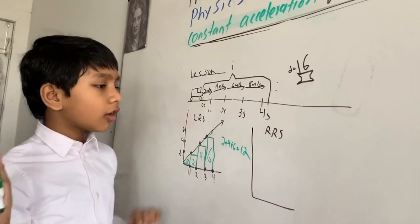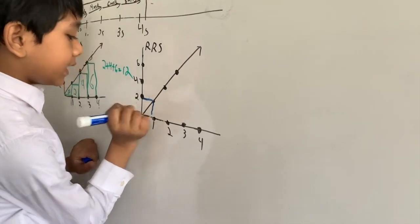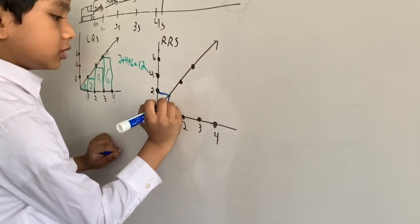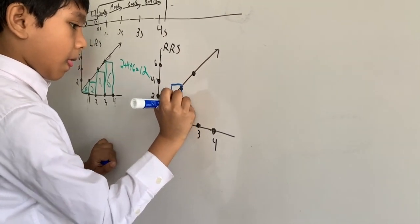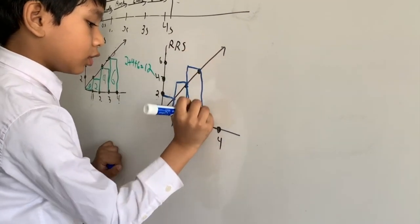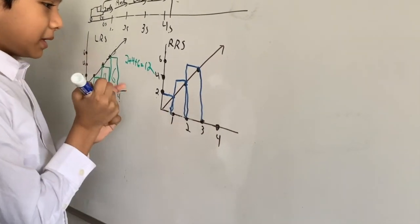But don't worry, we're also going to do the right Riemann sum. Overestimation is the right Riemann sum. And you see those triangle bits? That is overestimation.